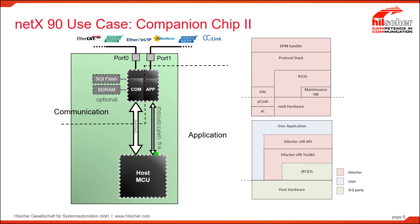Using a peripheral bus of some sort, communication happens between the host and the application side, and the application side just looks like an external application processor. As before, Hilscher provides everything needed for the communication side. The host processor uses third-party hardware and operating system along with the Hilscher toolkit and API, and the user writes their own application on the host processor.